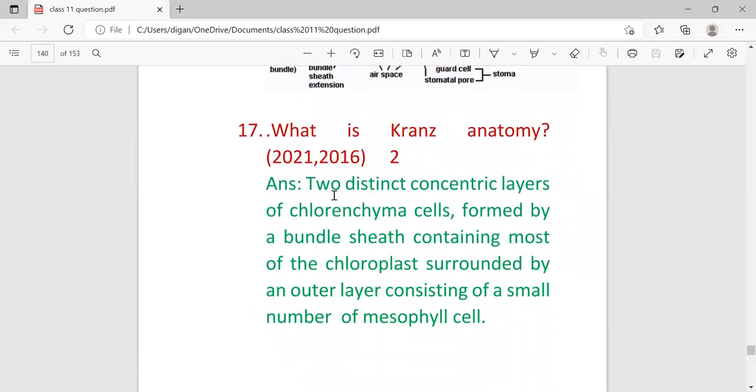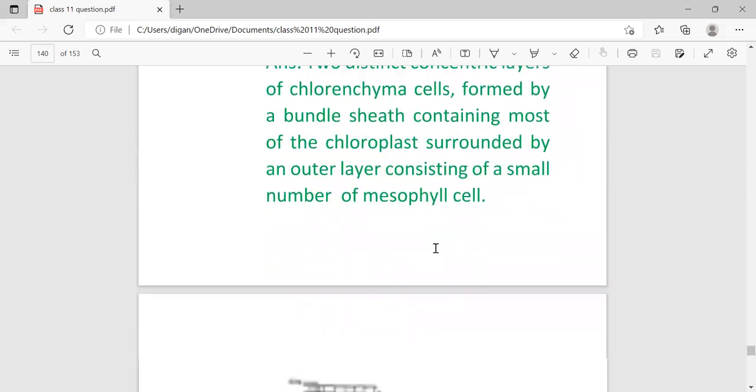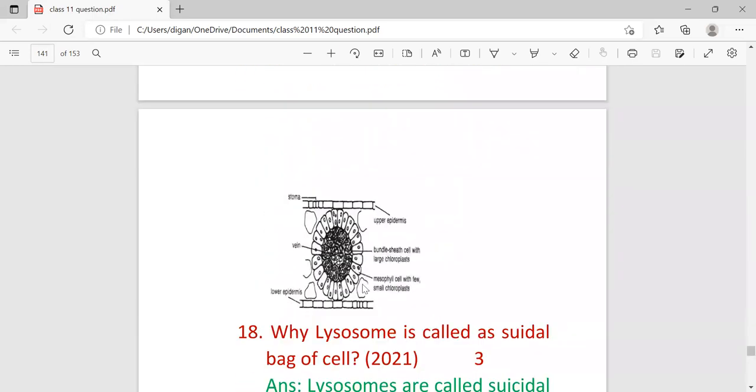What is Kranz anatomy? Two different concentric layers of parenchyma cells formed by bundle sheath containing most of the chloroplasts, surrounded by an outer layer consisting of a small number of mesophyll cells. This is a characteristic of C4 plants. This is the structure of Kranz anatomy.